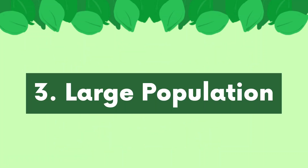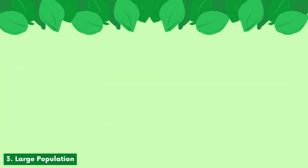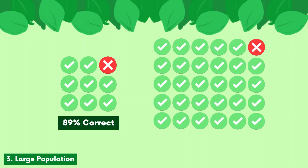Third, the population must be large. Errors in by-chance events can cause allele frequencies to change, but these random events do not make much difference in large populations. Think about it this way: in a group of 9, if there's one mistake, the group is 89% accurate. But in a group of 30, if there's one mistake, the group is 97% accurate. So larger populations tend to make up for small mistakes, while small populations expose those mistakes.